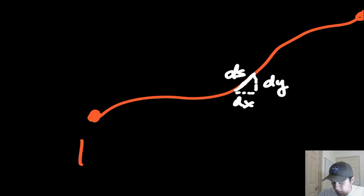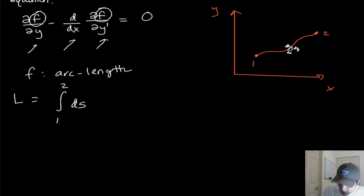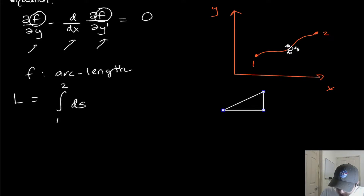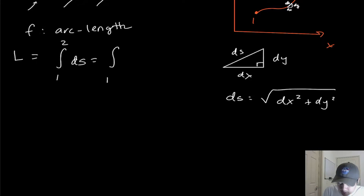This leg would be DY and this bottom part is DX. If we go infinitesimally small, we can show that DS, just using the Pythagorean theorem, is just equal to the square root of DX squared plus DY squared. So let's just replace DS with the square root of DX squared plus DY squared.